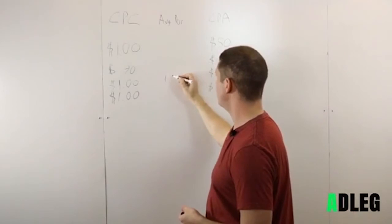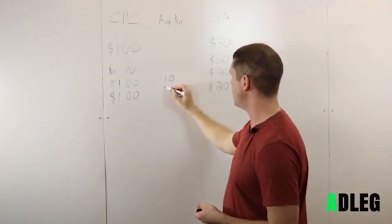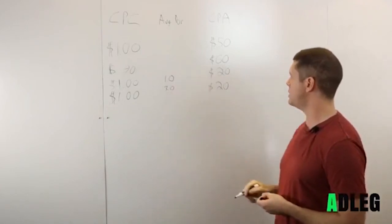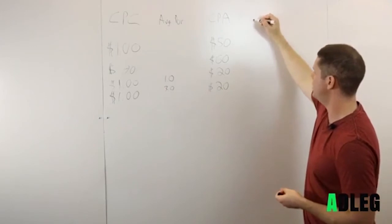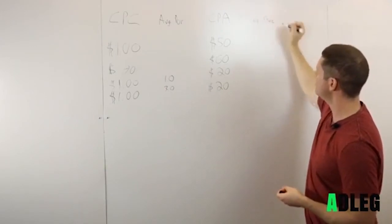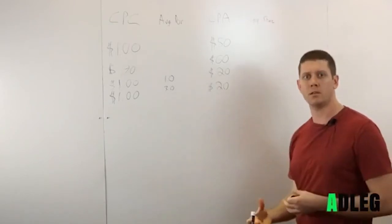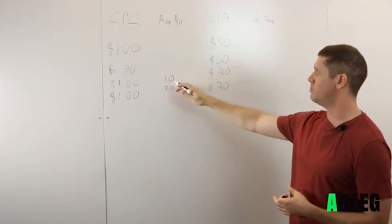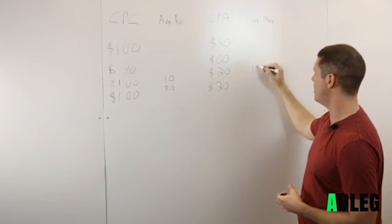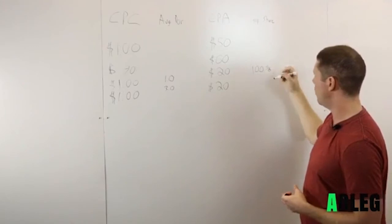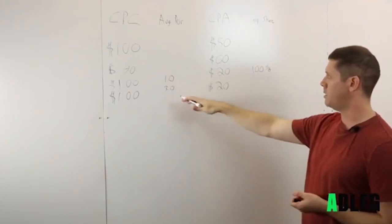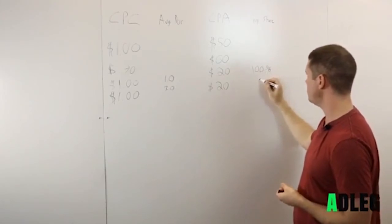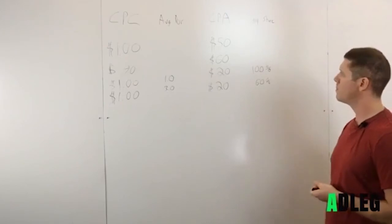So in this example here, our average position is 1.0. And in this example, our average position is 3.0. There is another metric you'd want to consider, which is your search impression share. The impression share tells you, out of all the possible searches for that keyword, how many times is your ad being shown. Usually if you're at a 1.0 average position, your impression share is going to be 100%, or very close to it. If you're in a 3 average position, anything under 1, you're probably not going to be at 100%. So let's say for this one we're at 60%.